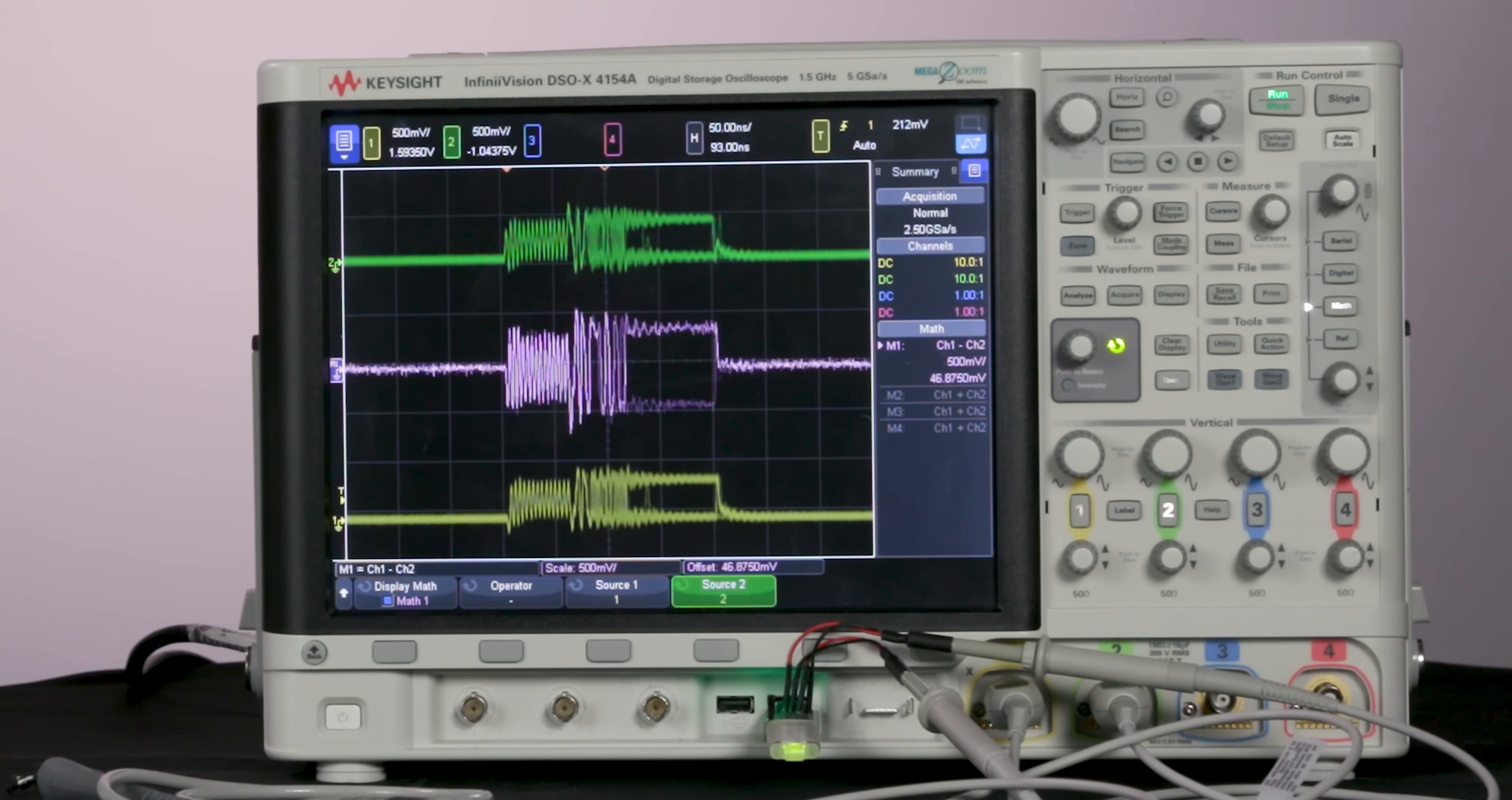Now we can set up a math function subtraction to find the difference between these two signals. So we can see that the purple trace here in the middle is channel 1 minus channel 2. So I'm going to save it as a reference waveform real quick so we can compare it to our differential probe.